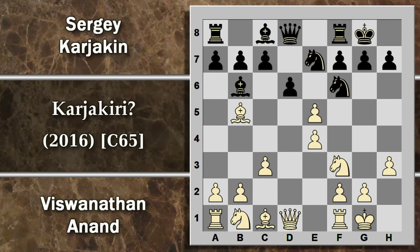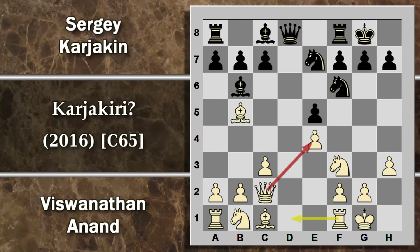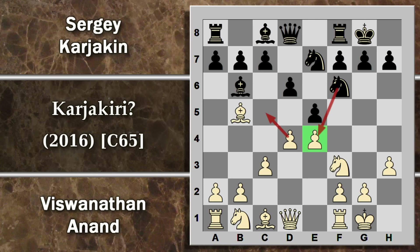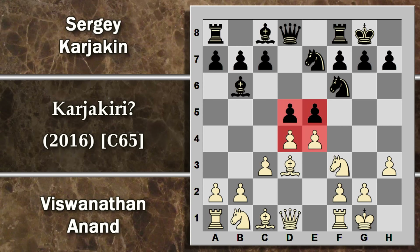Le altre alternative potevano essere torre 1 per difendere il pedone, oppure il cambio che aprirebbe la colonna D, ma non è troppo facile da gestire per il bianco. C'è donna C2 che difende il pedone e si prepara torre D1, con alcuni controg iochi, però il nero a sua volta difende correttamente. Ad ogni modo viene giocato alfiere D3 e Karjakin continua con D5, cercando il forte contrasto al centro.